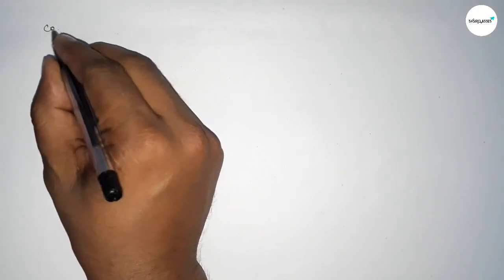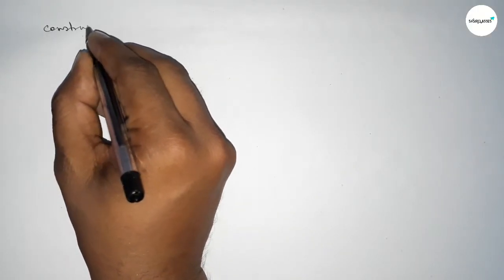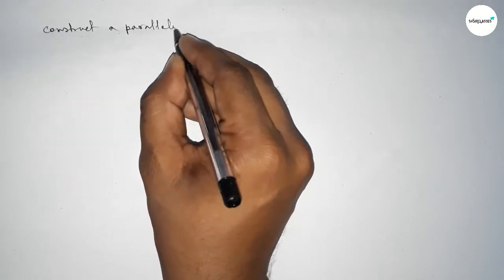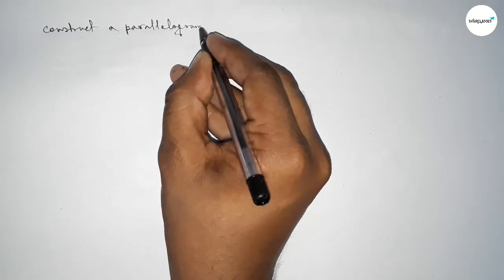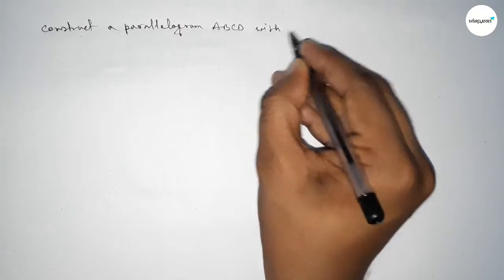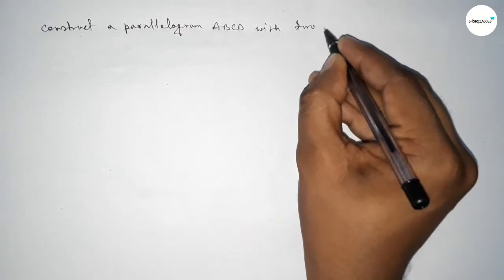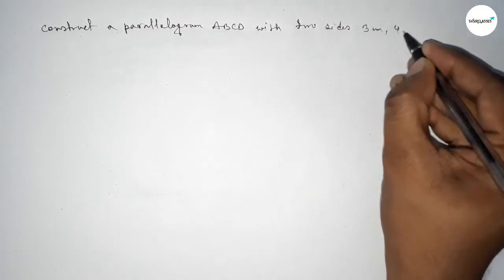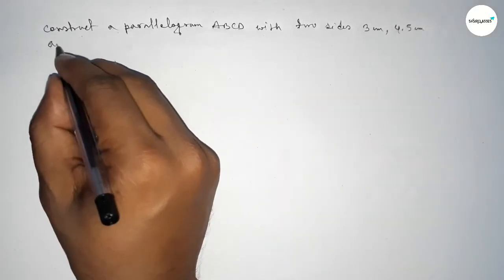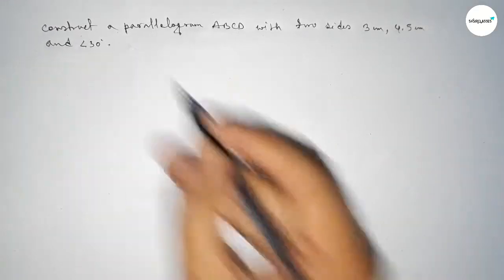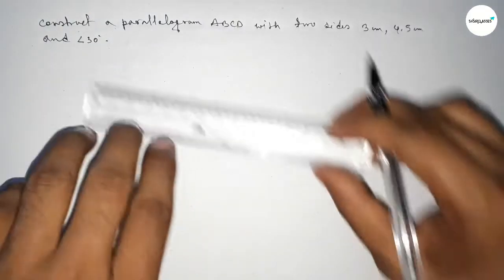Hi everyone, welcome to SJ's share classes. Today in this video we have to construct a parallelogram with two given sides of 3 centimeter and 4.5 centimeter, and an angle between them of 30 degrees. So let's start the video.